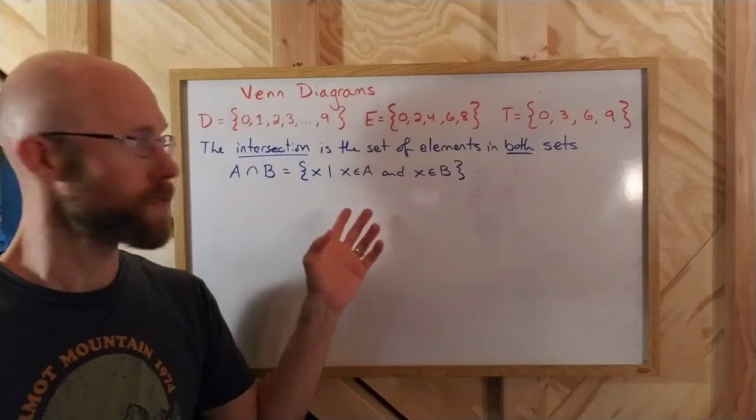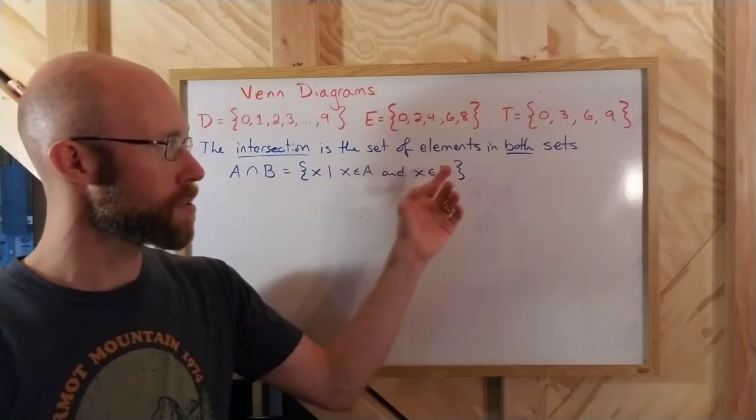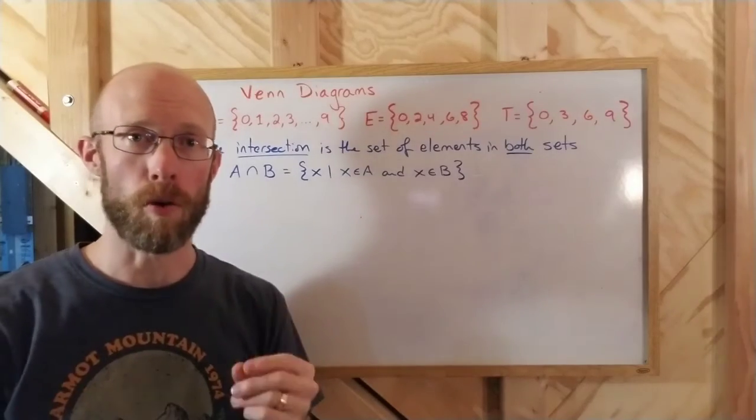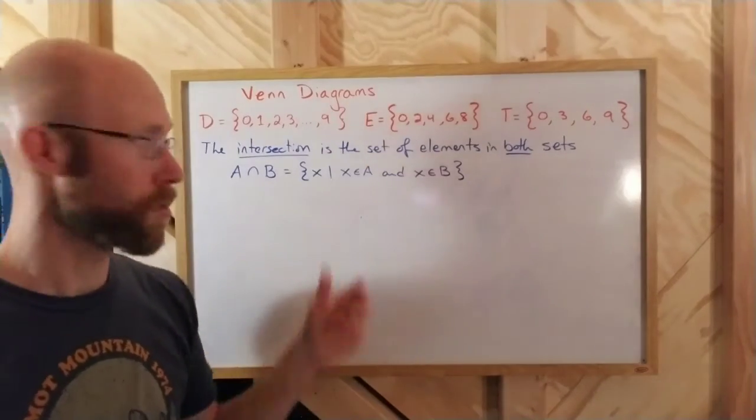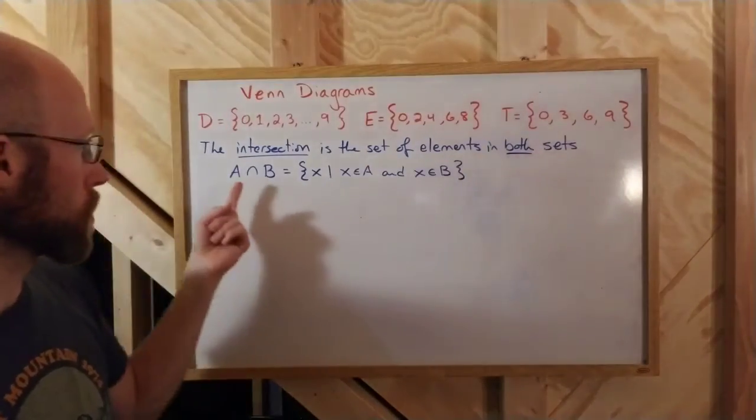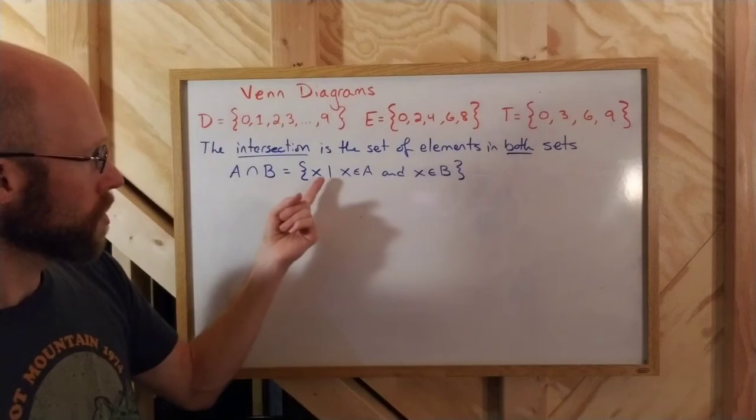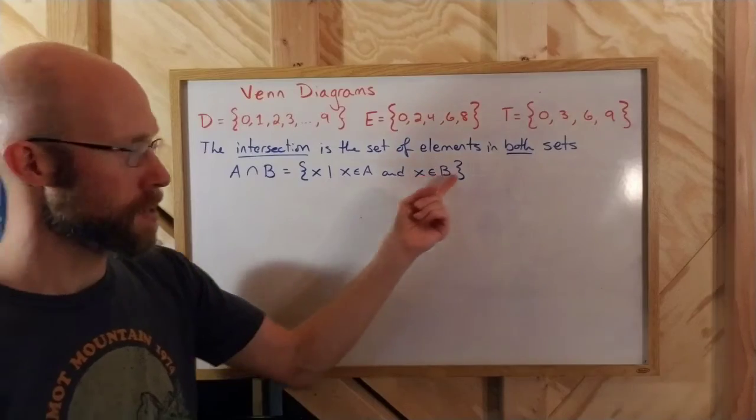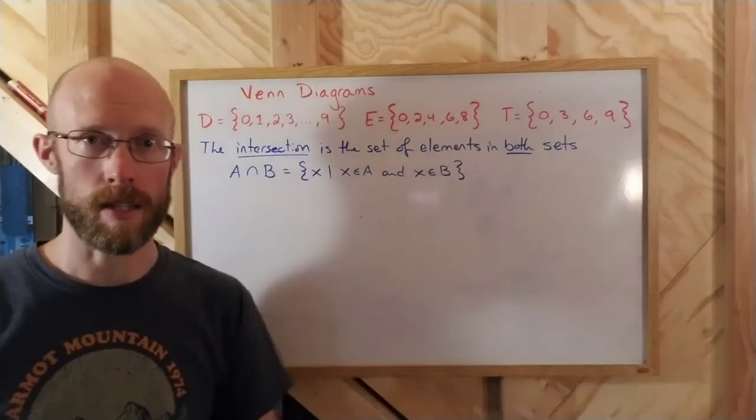The intersection of two sets is the set of elements in both sets. The set of all the elements that are in both. Formally, or using set builder notation, we would say it's a set of all X's such that X is in A and X is in B. X is an element of A and X is an element of B.